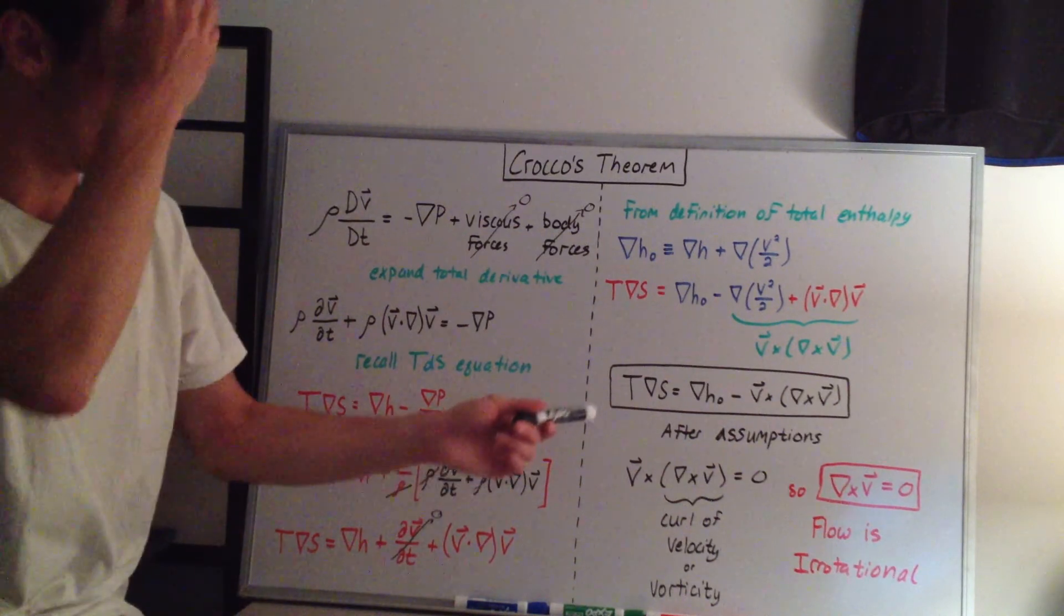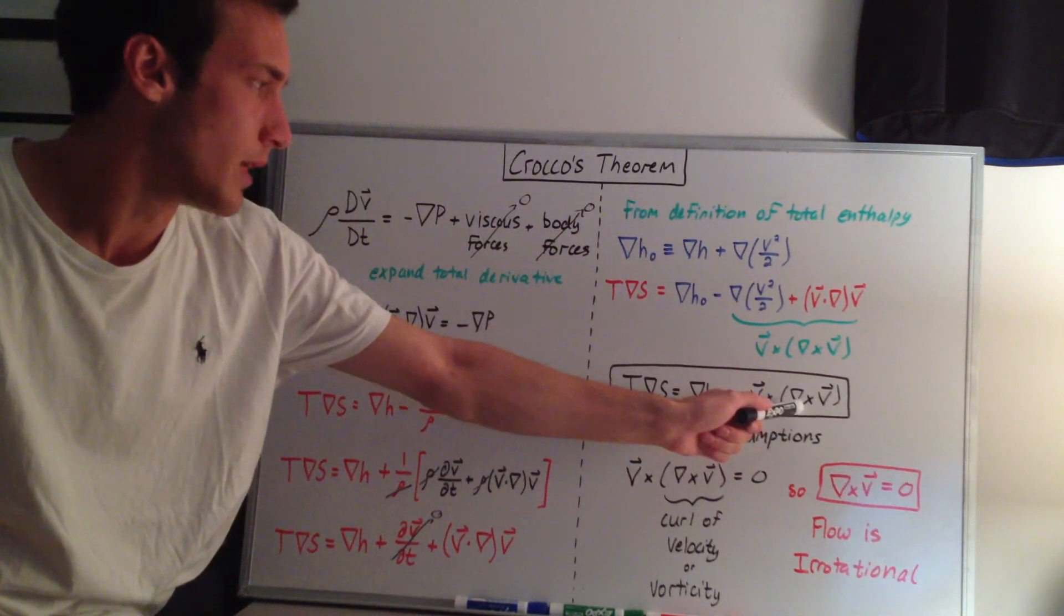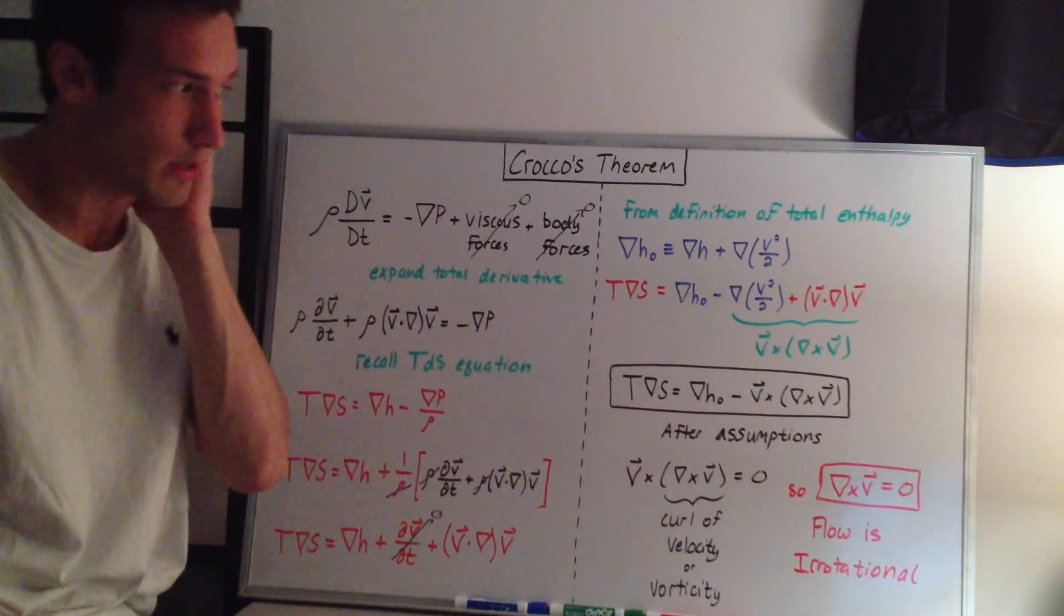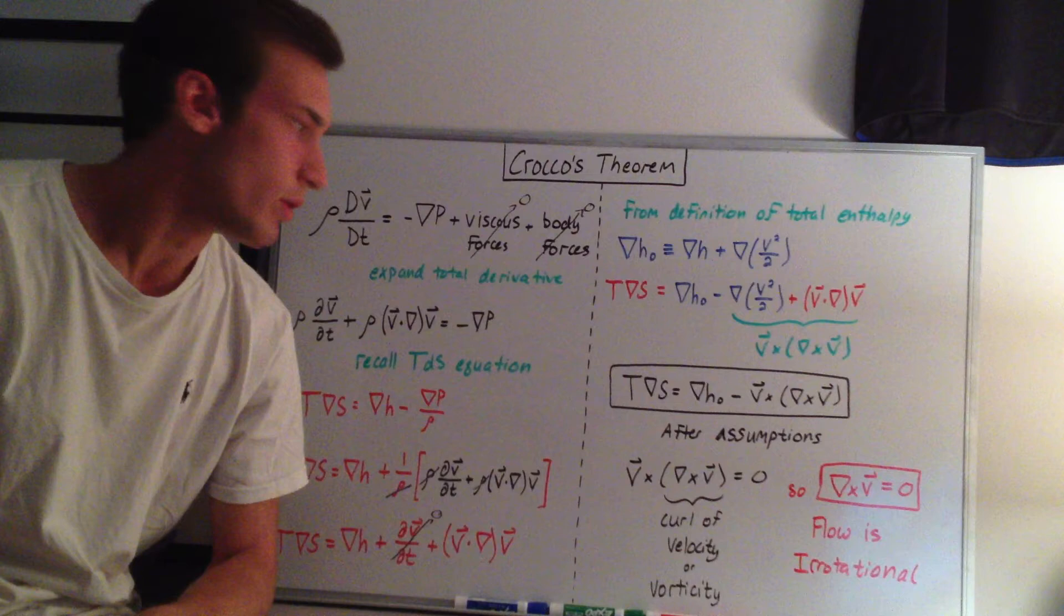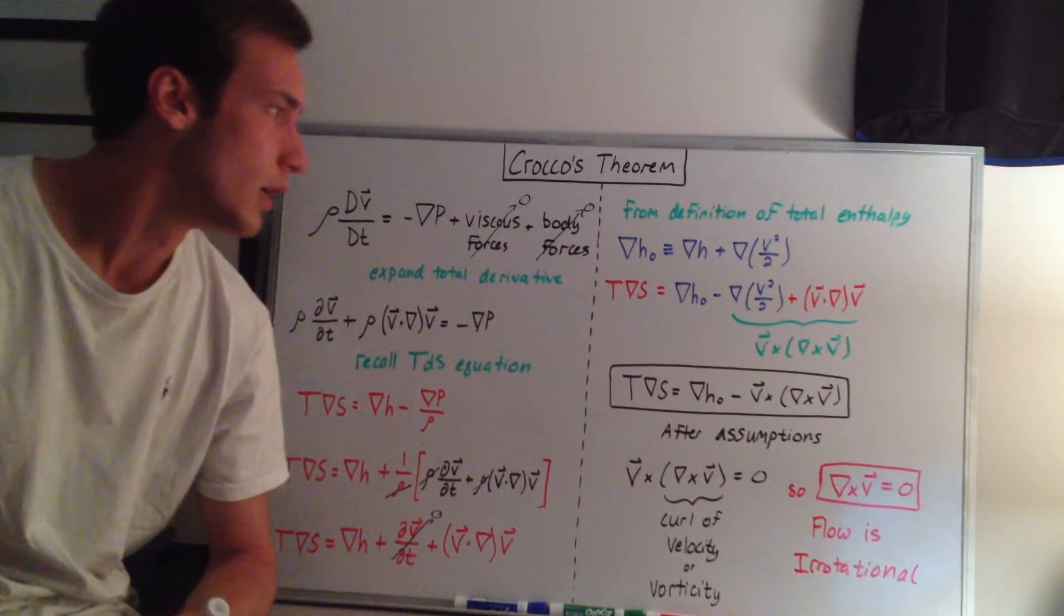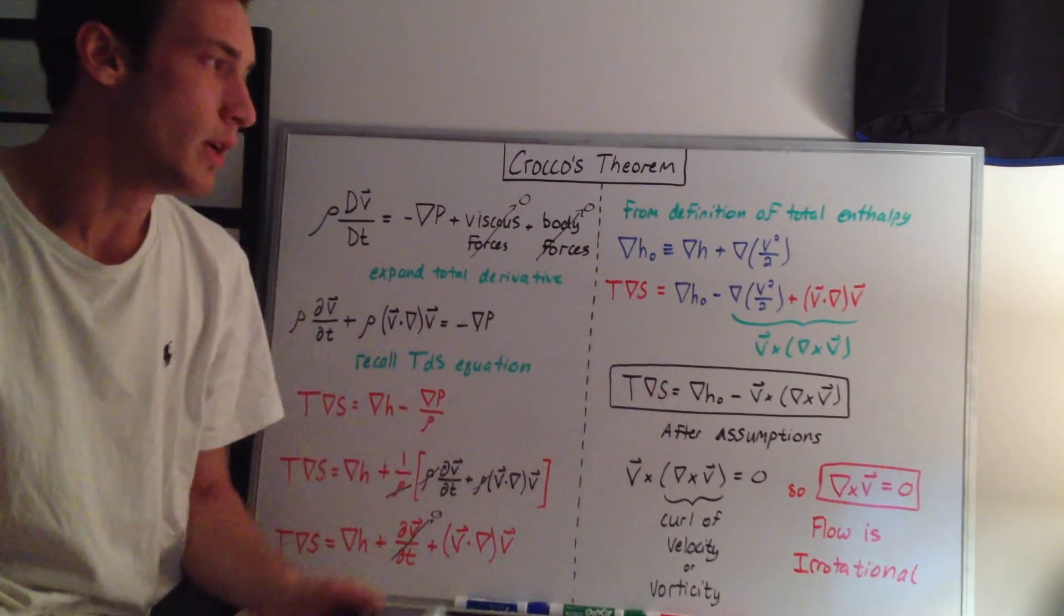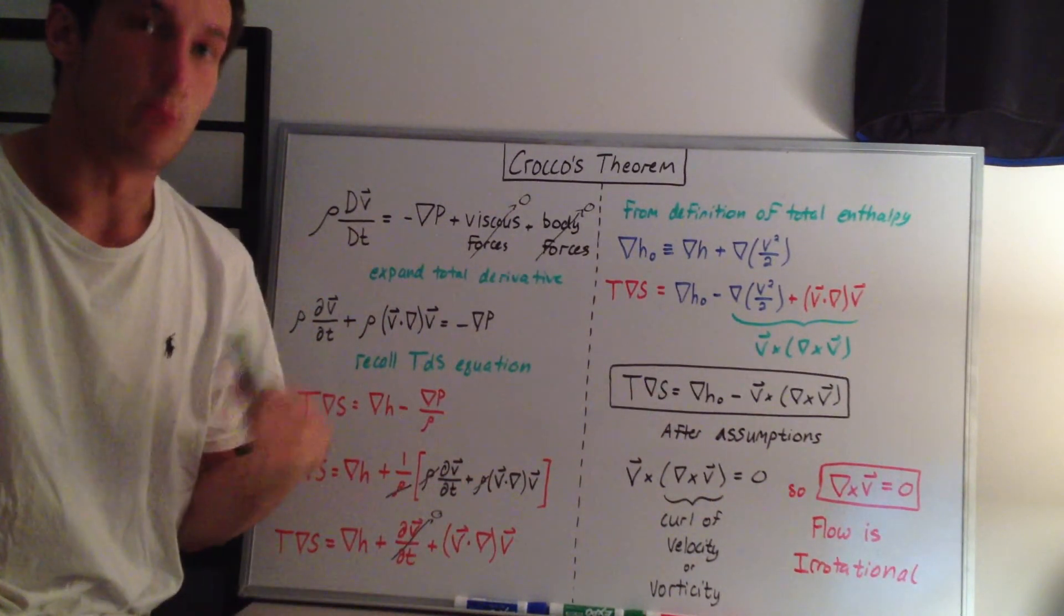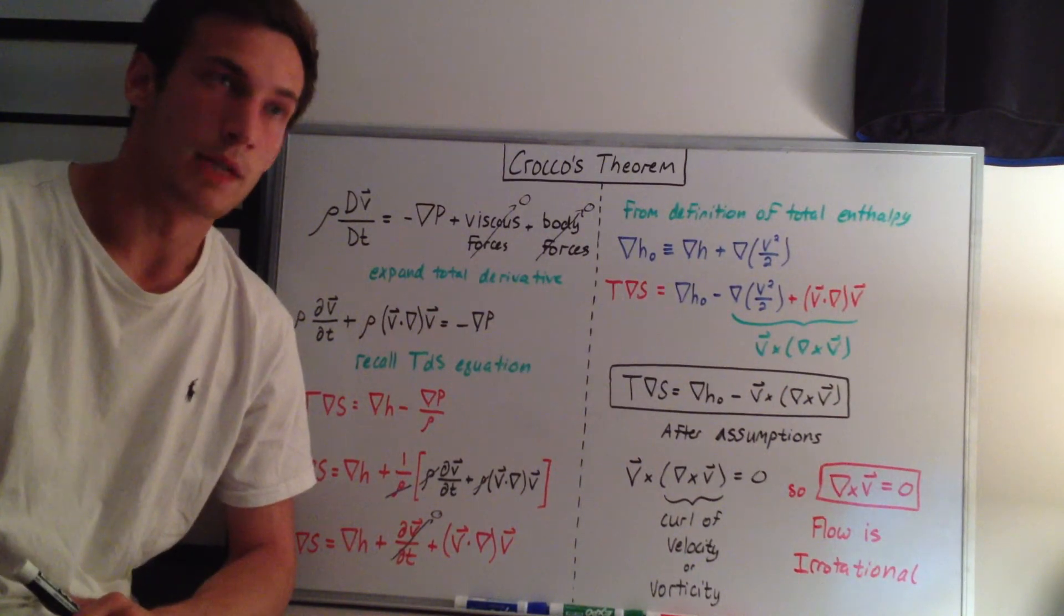So what this is saying is that if you look at this del cross v, that's actually the curl of the velocity, or the vorticity of the flow, which equals 2 times the angular momentum of the flow. So what this is saying is that if you have gradients of entropy or enthalpy, it'll create a rotational flow, which is inherently much more difficult to solve and to get analytical solutions for.